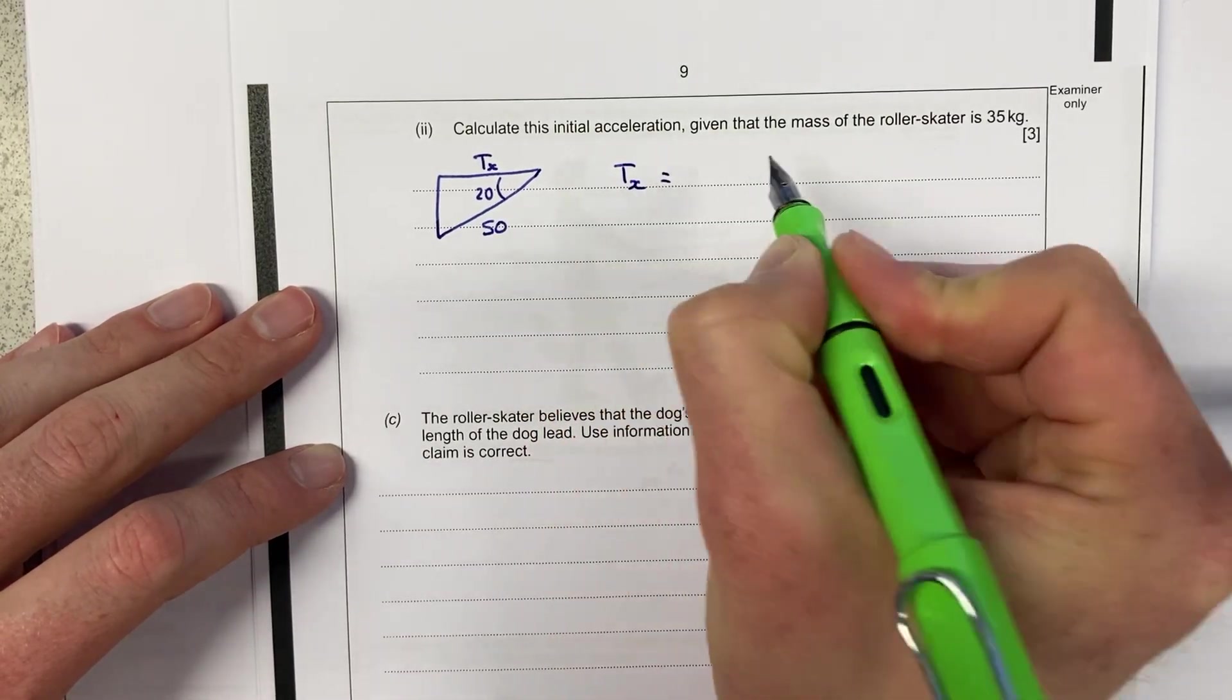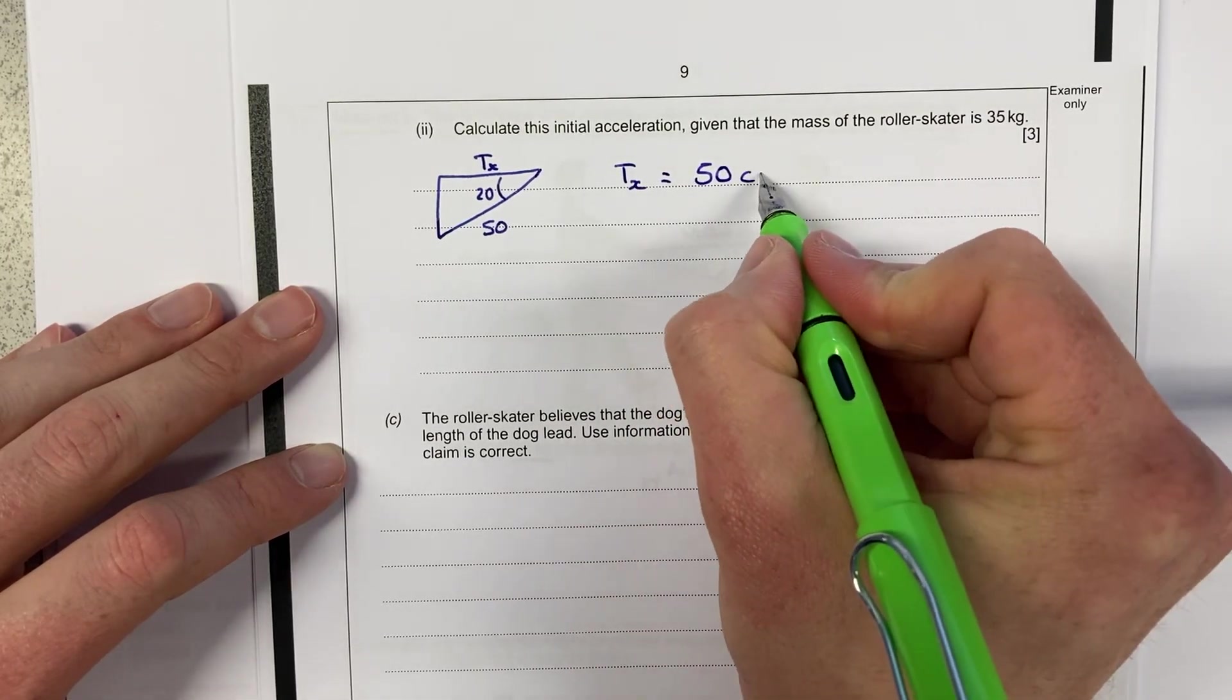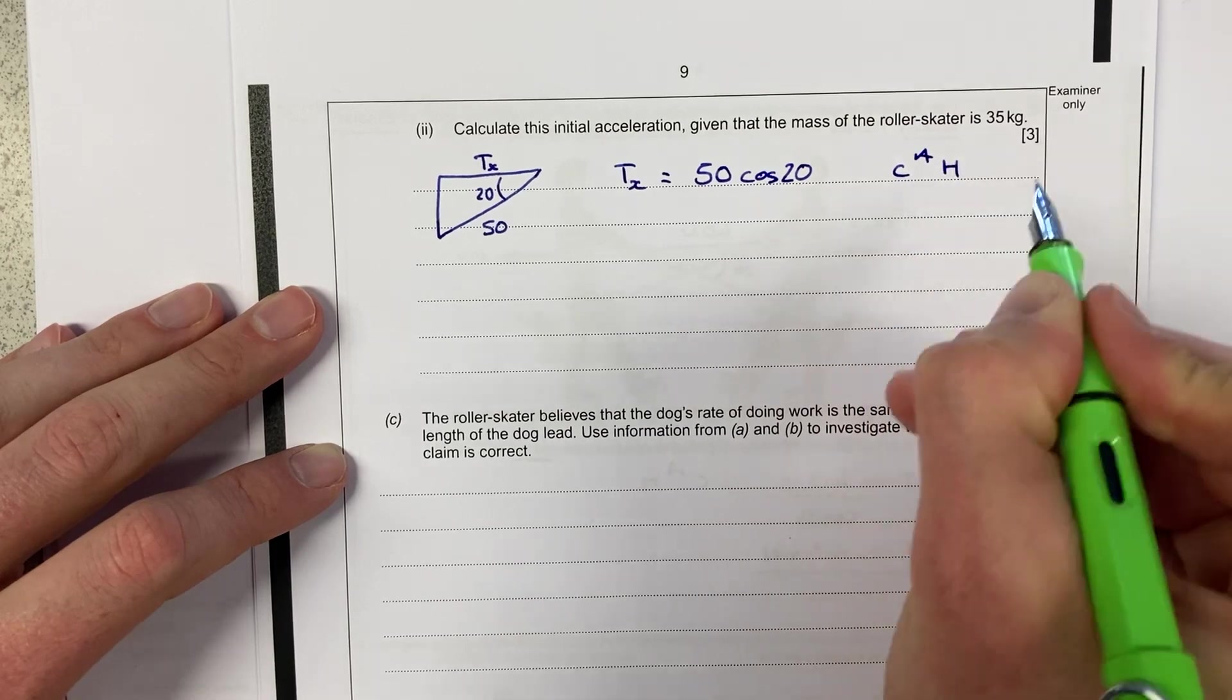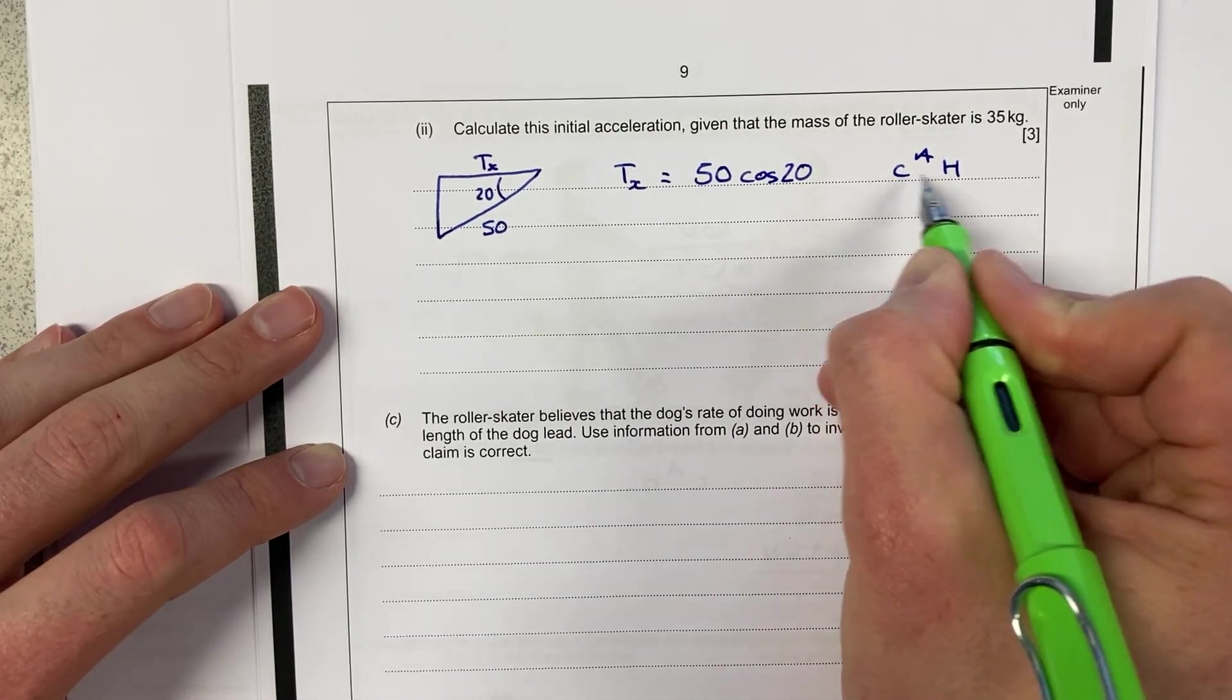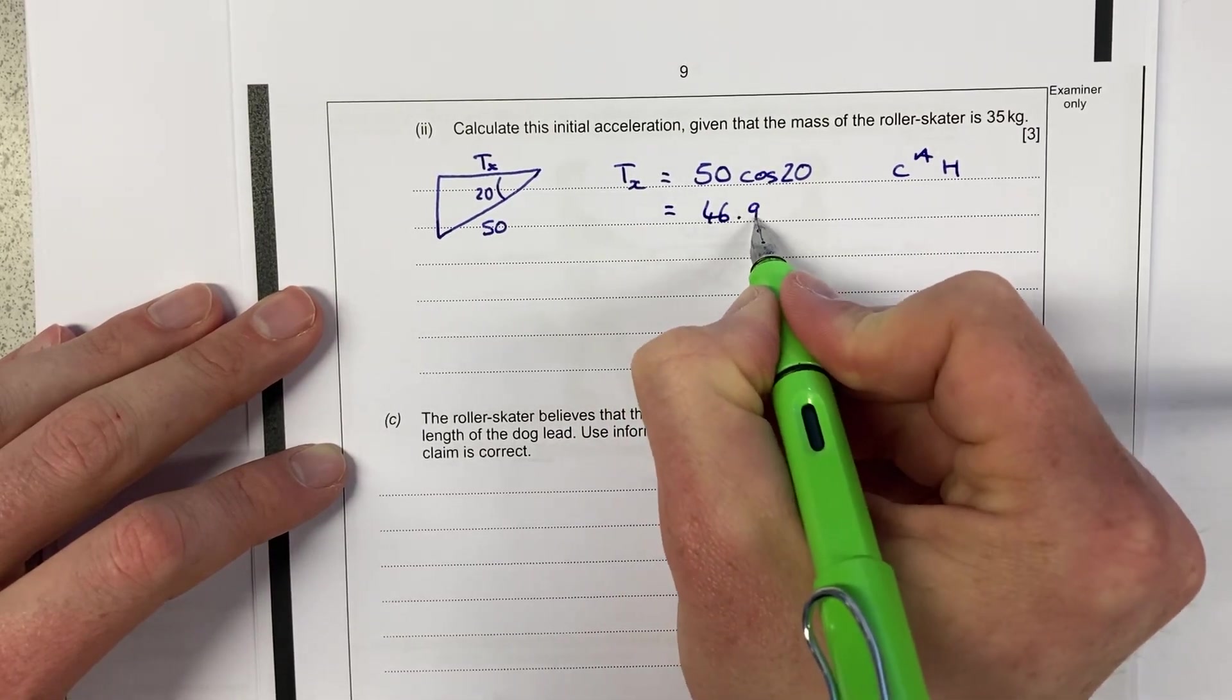So T in the x direction is equal to 50, which is the tension overall, times cos 20, cos this time we're doing. I don't know my adjacent, but I do know these two values, so they're going to times across. That gives me 46.98.